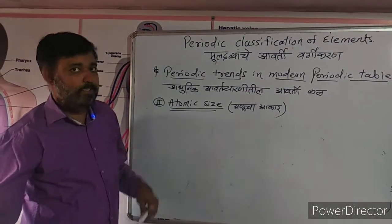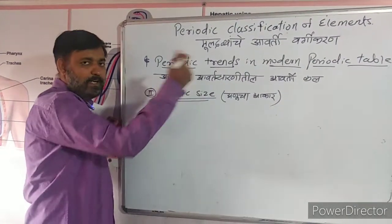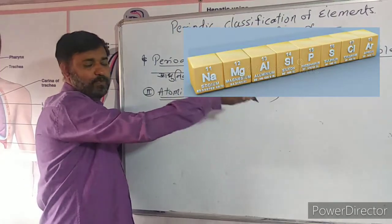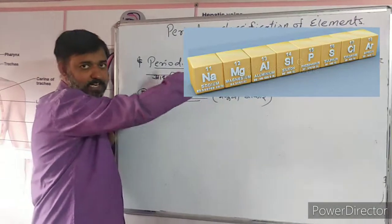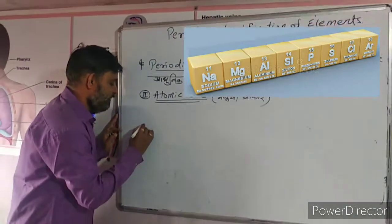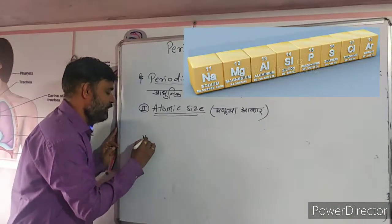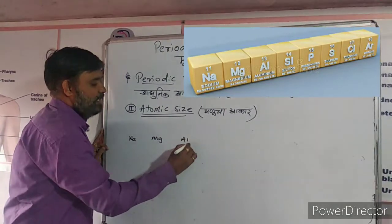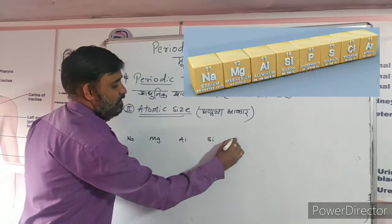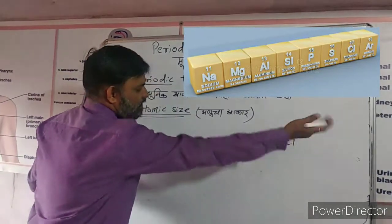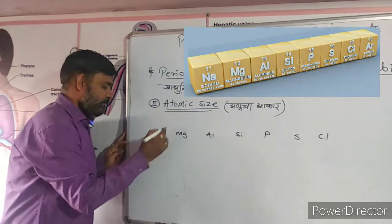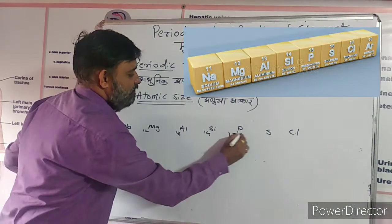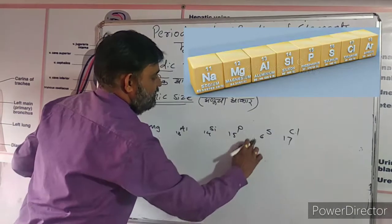Let's see how atomic size changes in a period. We take the example of the third period: sodium, magnesium, aluminium, silicon, phosphorus, sulfur, and chlorine — with atomic numbers 11, 12, 13, 14, 15, 16, and 17. Drawing their atomic structures: sodium has 2, 8, 1; magnesium has 2, 8, 2; aluminium has 2, 8, 3; and silicon has 2, 8, 4.